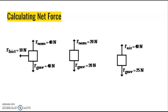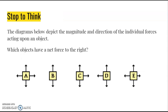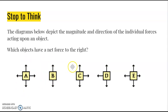Here's a question: given several objects with forces represented by vector arrows — longer arrows indicating stronger forces — which objects have a net force acting to the right? The answer is object C. Object A has no net force, object B has no net force, object C has a net force to the right, object D has a net force to the left, and object E also has a net force to the left. In every situation here, the vertical forces cancel out.